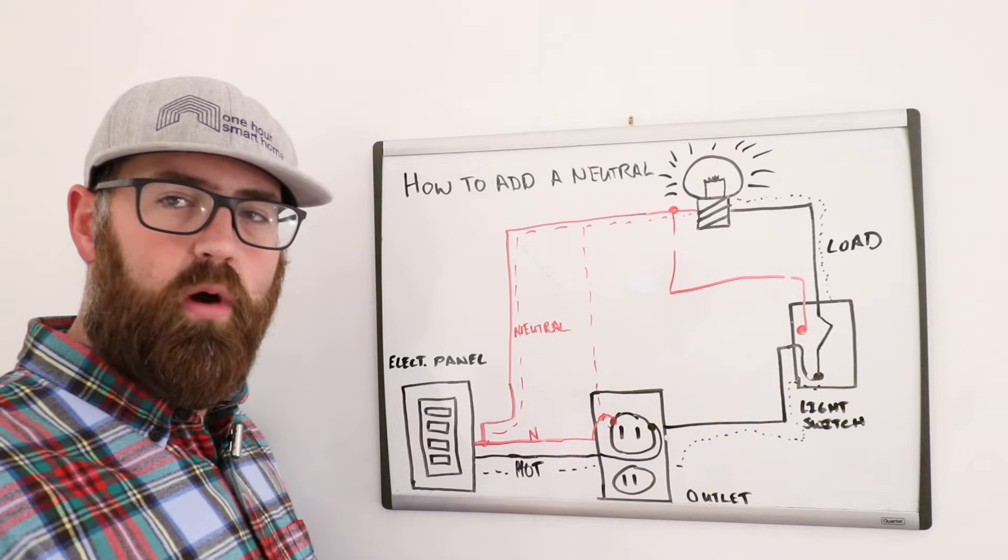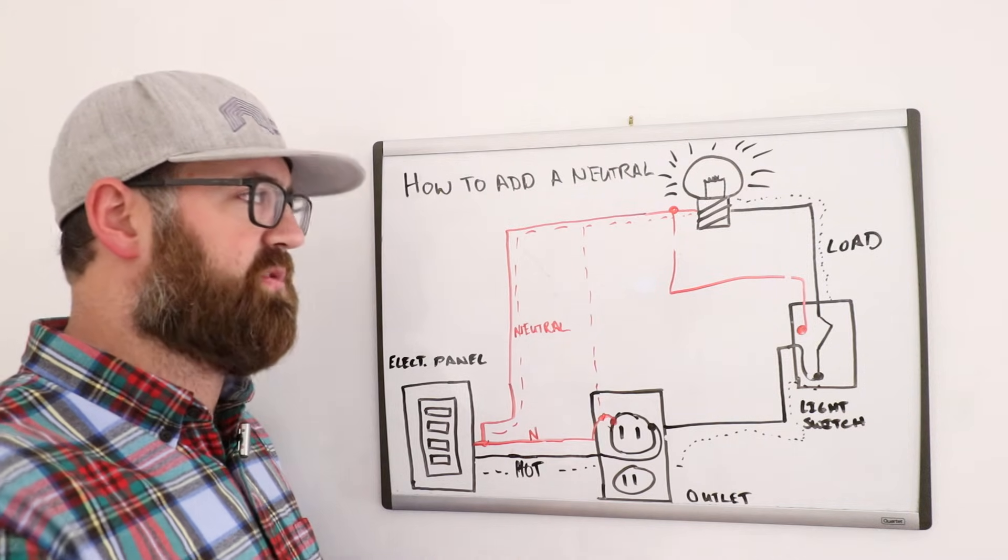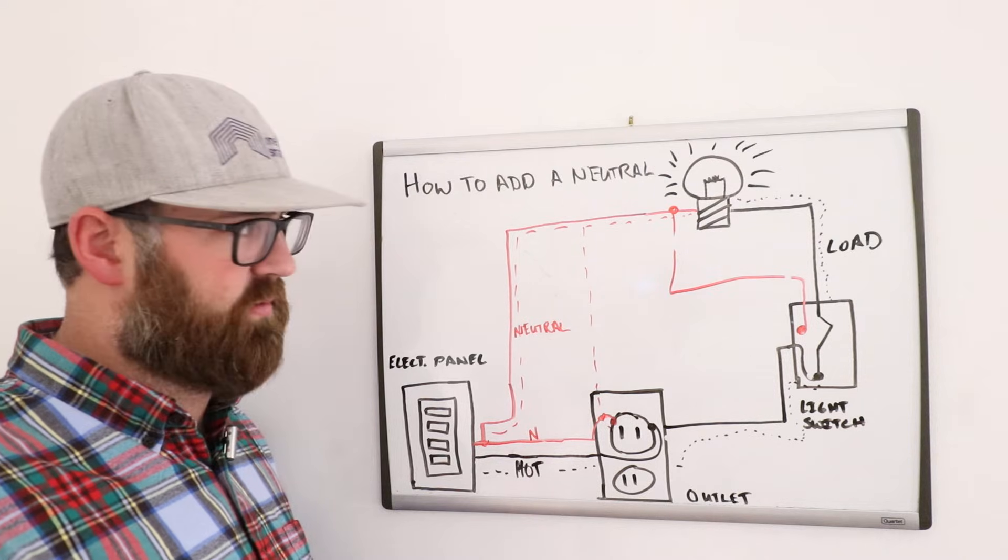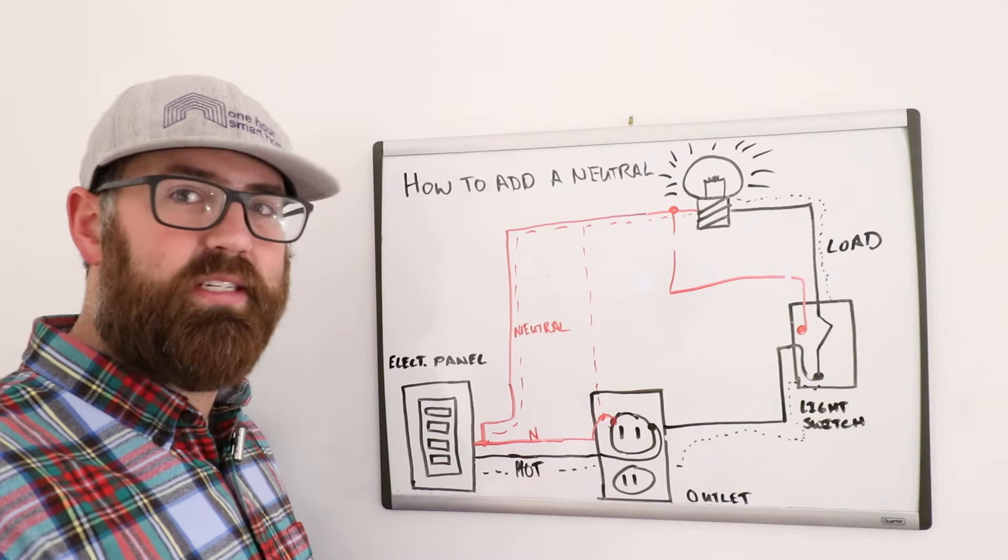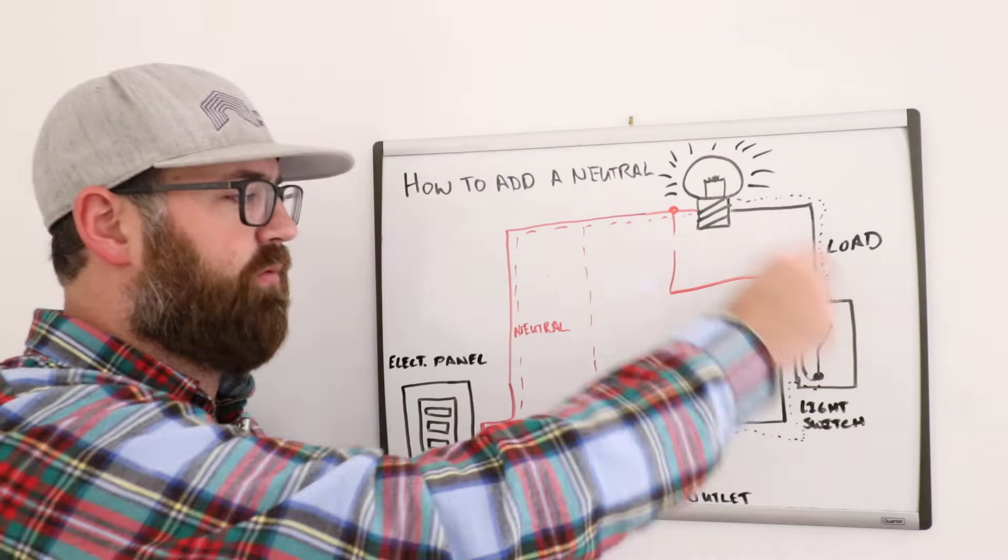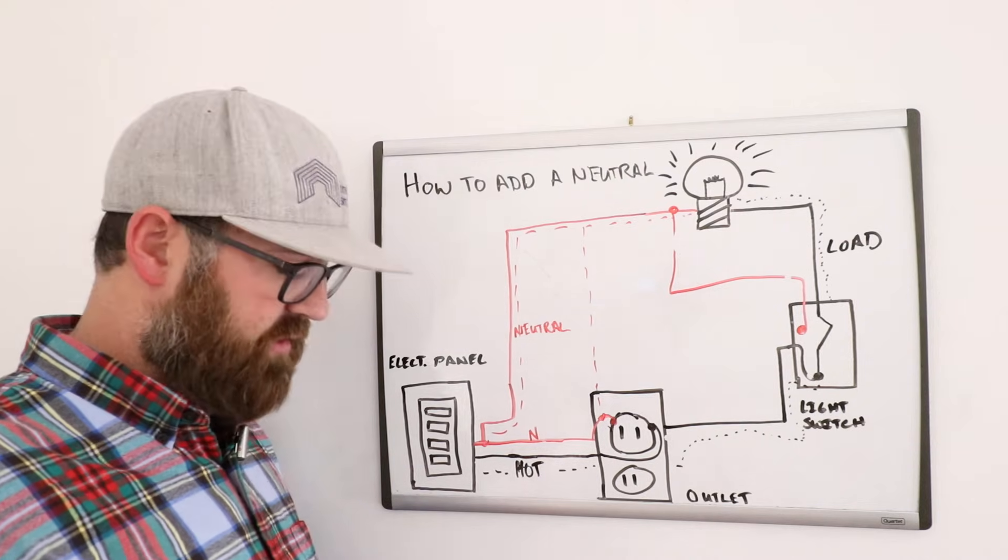However, it's probably going to require you to open up walls and do some patching and everything to get that wire back down into the light switch. So it's not always super easy. But if you have conduit, it's as simple as just pulling another wire down back through the conduit and into the light switch.